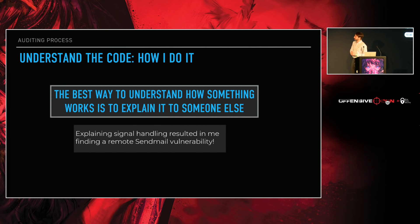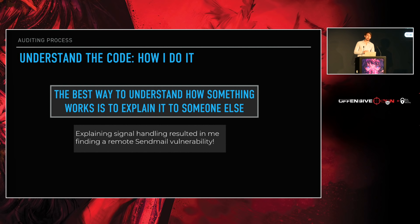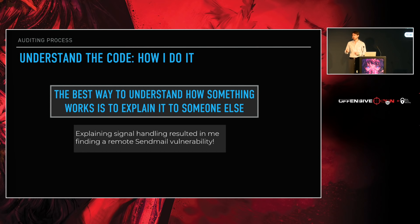The best way to understand how something works is to explain it to someone else — whether you're doing a presentation, a blog post, a book, or a training session. It's amazing how many times I've written papers for things I basically thought I knew back to front, and how many blind spots I realized I had. When you understand it for yourself, you take mental shortcuts you don't really notice you're taking. When you're forced to write it down or explain it to someone else, they'll ask you questions where you realize you have no idea and there's totally a blind spot.